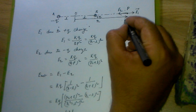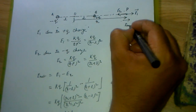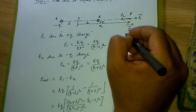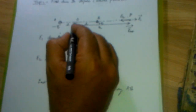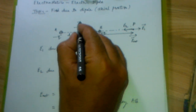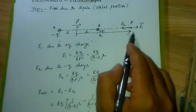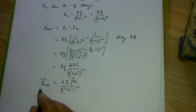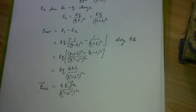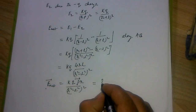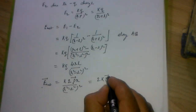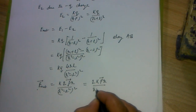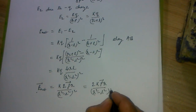The direction of the net electric field at point P is along A to B, which is the same direction as the dipole moment vector (from negative to positive charge). Since both are in the same direction, in vector form the electric field is along the dipole moment vector. The final expression is: E_net = 2KPR divided by (R² minus L²) whole square.